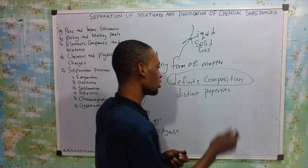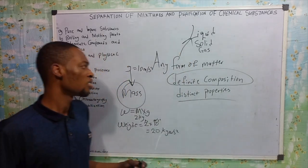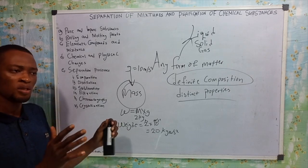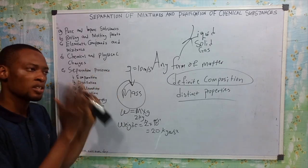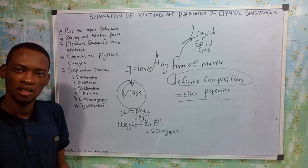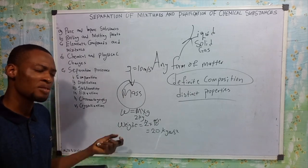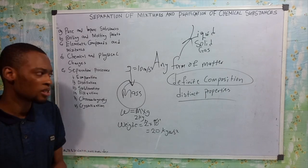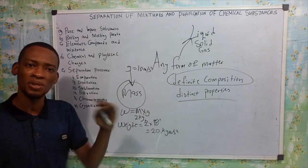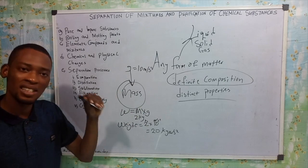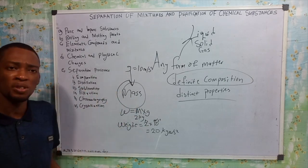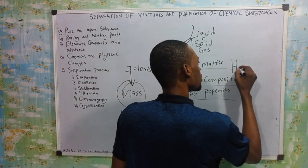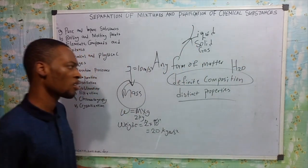They have specific composition — definite composition. And the substances have distinct properties that distinguish them from others. For example, water and kerosene — you should be able to differentiate them. They have their definite composition and their distinct properties. For example, water is composed of hydrogen and oxygen, so the formula for water is H₂O.